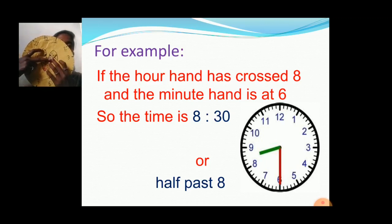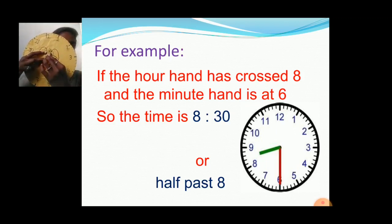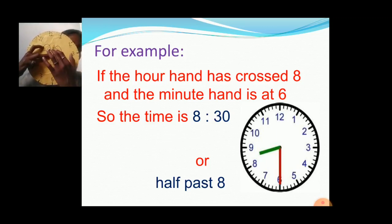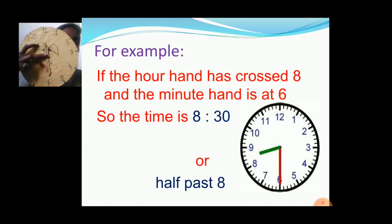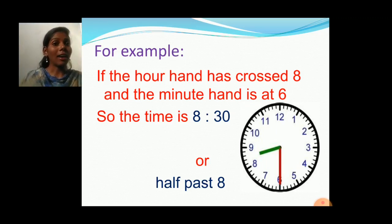Now tell me if the hour hand has crossed number 12 and the minute hand is at 6. The time is 12:30 or half past 12. Why half past 12? Because it crossed number 12, and for half past it shows 30 minutes.